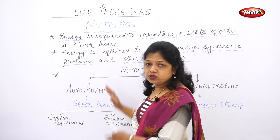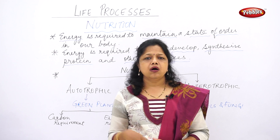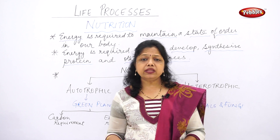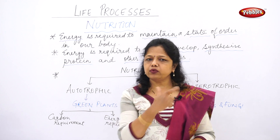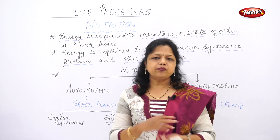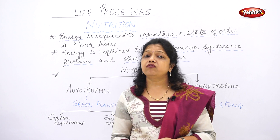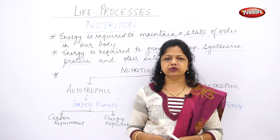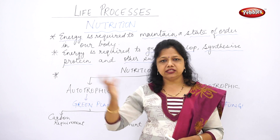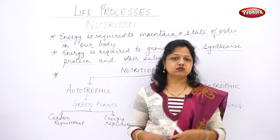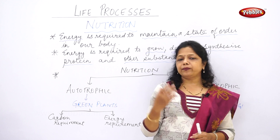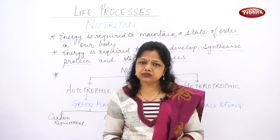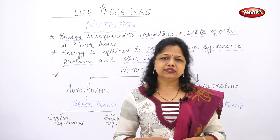Now let's go back to autotrophic nutrition. Green plants prepare their own food, and the process by which they do this is called photosynthesis. When we divide the word: 'photo' means light, and 'synthesis' means to prepare something. So to prepare food in the presence of light using raw materials carbon dioxide and water is called photosynthesis.